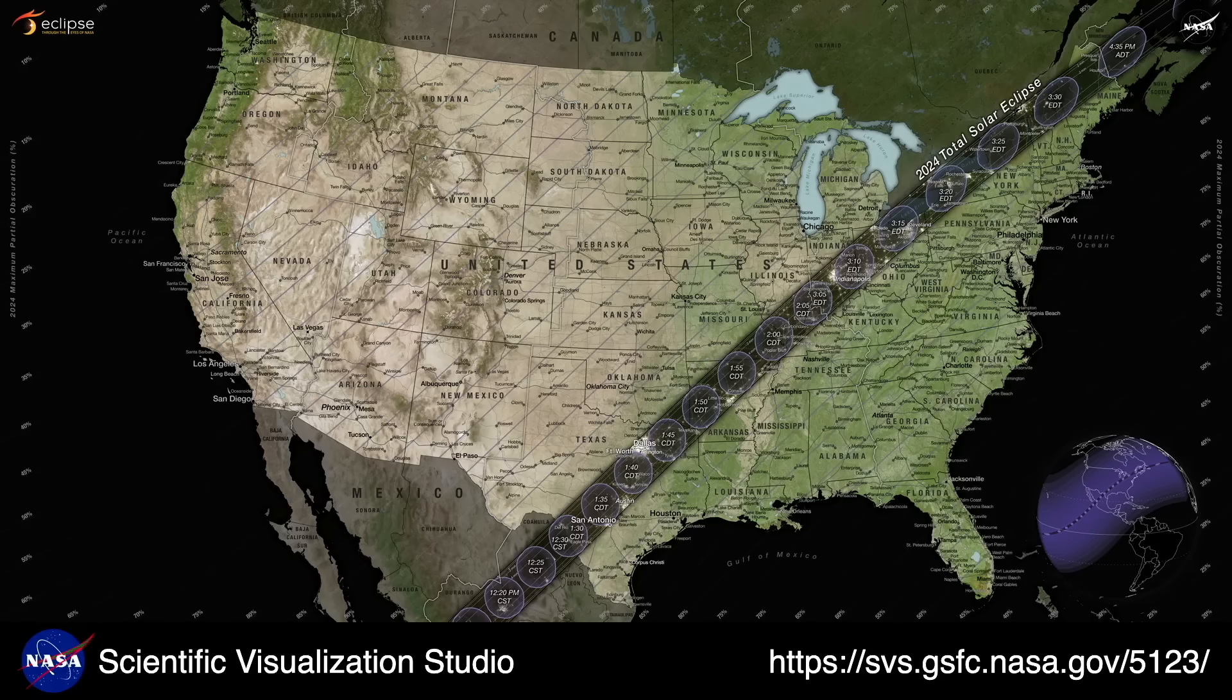The path of totality passes through Mexico into Texas, Oklahoma, Arkansas, Missouri, Illinois, Ohio, New York, a bit of New Hampshire and Vermont, and finally into Maine, Nova Scotia and New Brunswick.